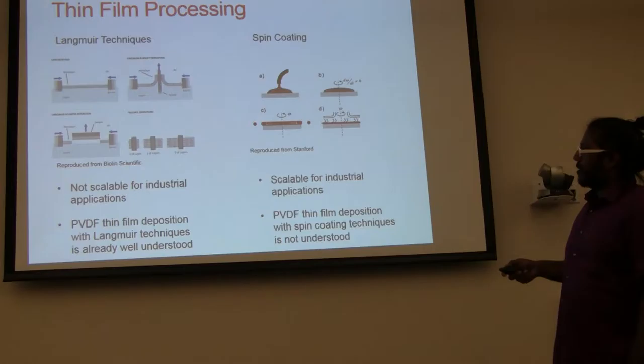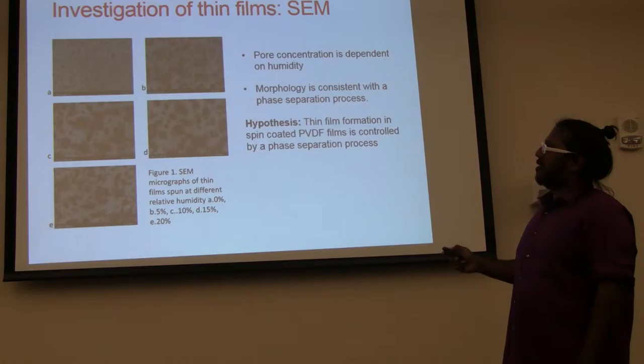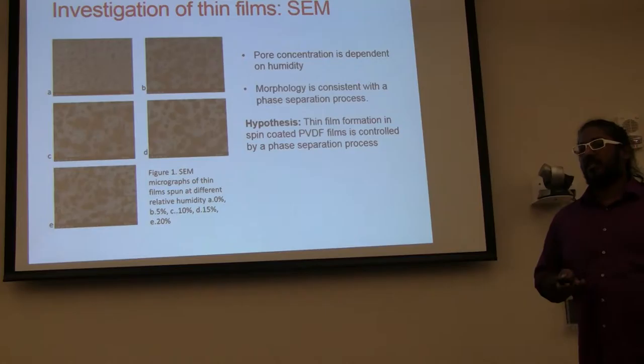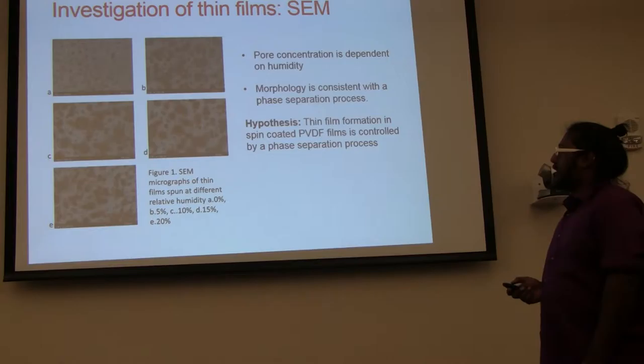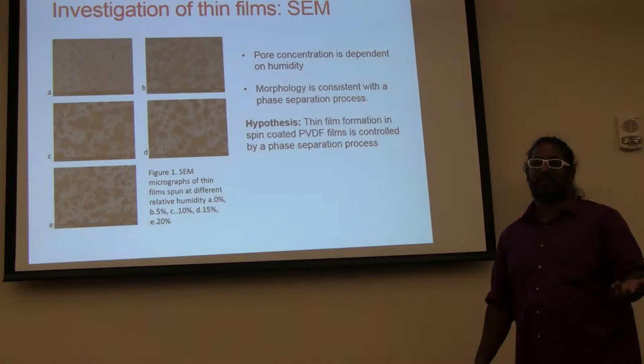But the problem is that when we try to spin coat polyvinylidene fluoride or PVDF, the films are not of very good quality. This is what I'm talking about. When we spin coat it in normal conditions, we get all these holes in the film, as you can see. This is an SEM image. This scale right here is 30 microns. All these holes prevent it from being electrically useful because you try to put a top contact on it, it's just going to leak through. All electricity is going to leak through.